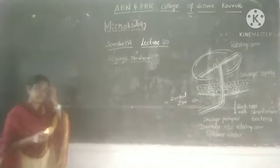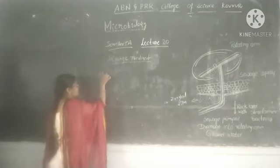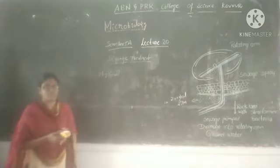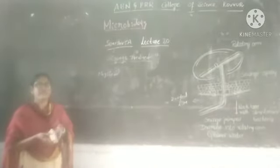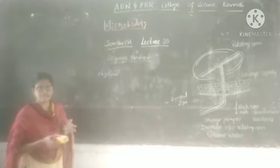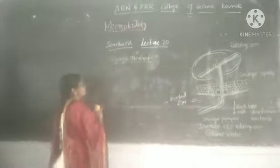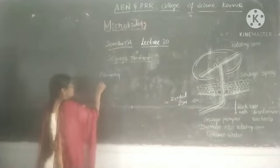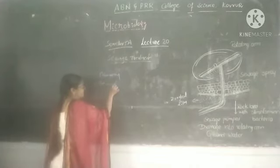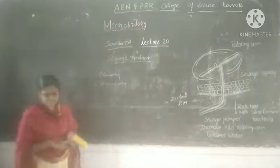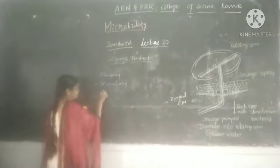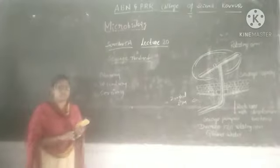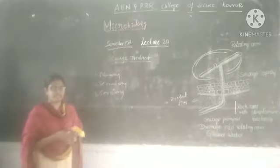Wastewater is treated using three methods. The first is the primary method, the second is the secondary method, and the third is the tertiary method. In the secondary method, there are two approaches: aerobic and anaerobic.